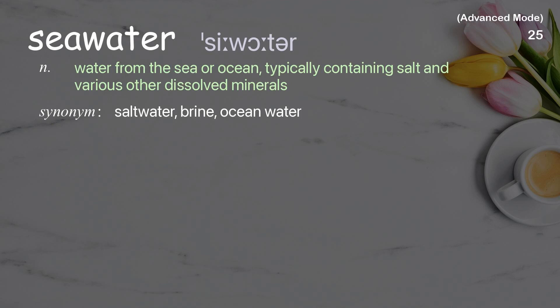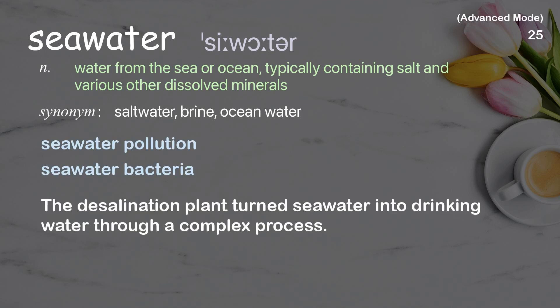Seawater: water from the sea or ocean, typically containing salt and various other dissolved minerals. Examples: seawater pollution, seawater bacteria. The desalination plant turns seawater into drinking water through a complex process.